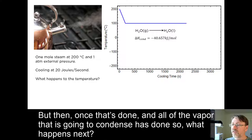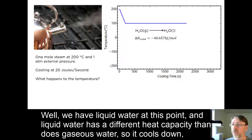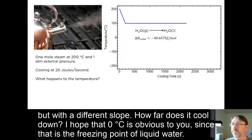But then, once that's done and all of the vapor that is going to condense is done so, what happens next? We have liquid water at this point. And liquid water has a different heat capacity than does gaseous water. So it cools down, but with a different slope. How far does it cool down? I hope that 0 degrees C is obvious to you, since that is the freezing point of liquid water.